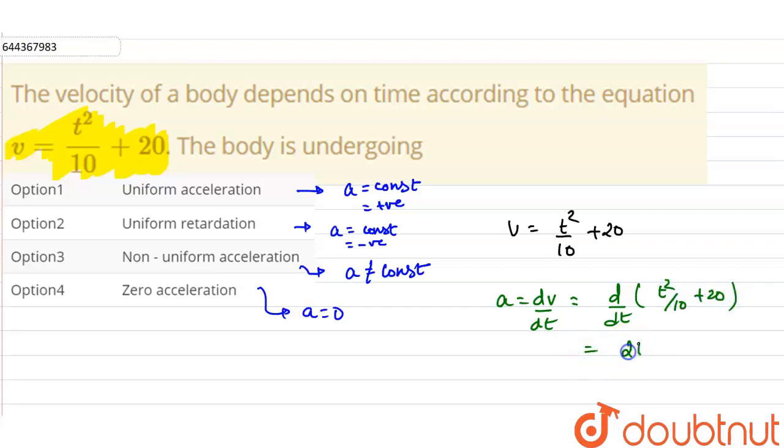So, from here it will be 2t or acceleration will come as 2t upon 10. So, this will be t upon 5.